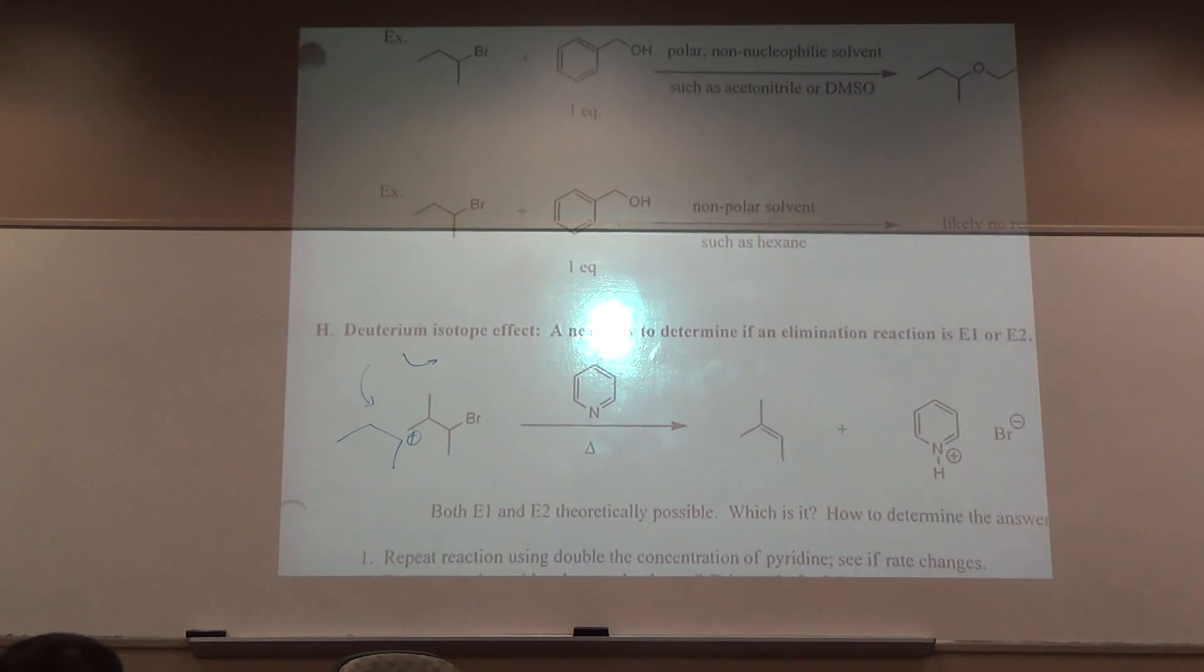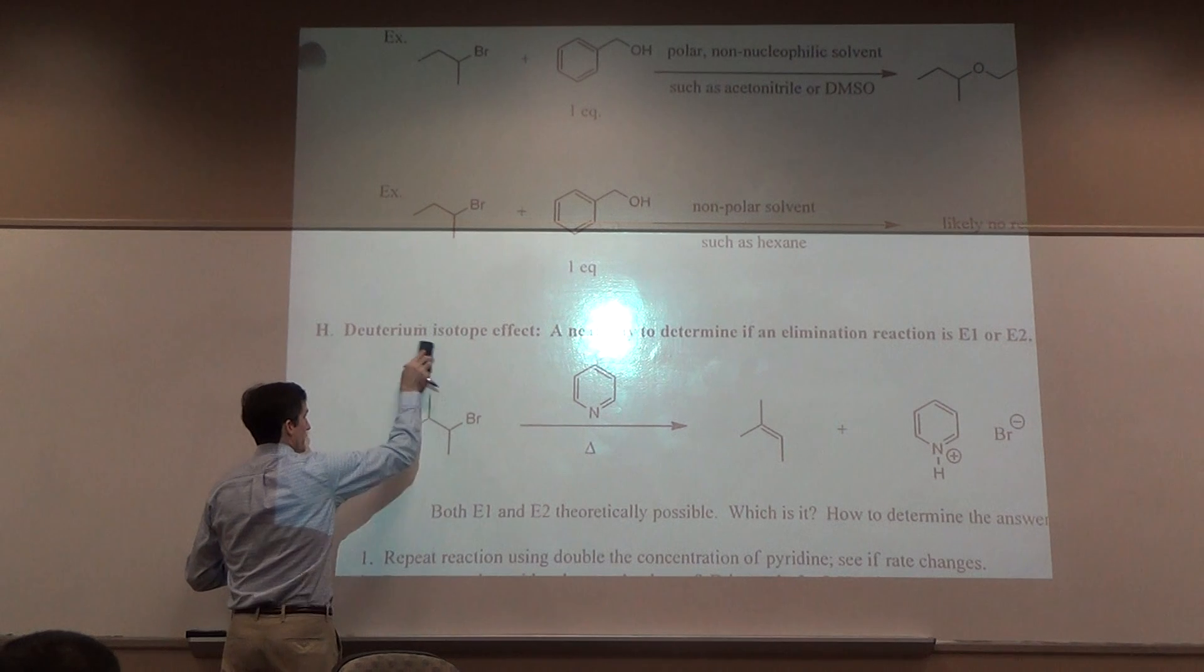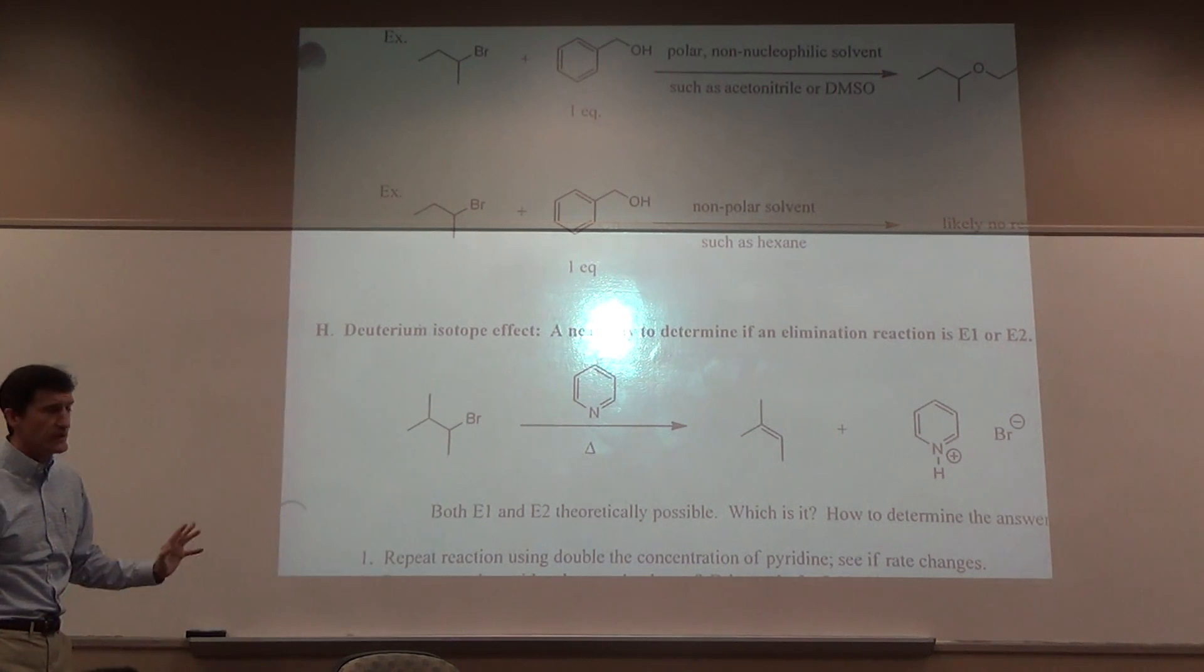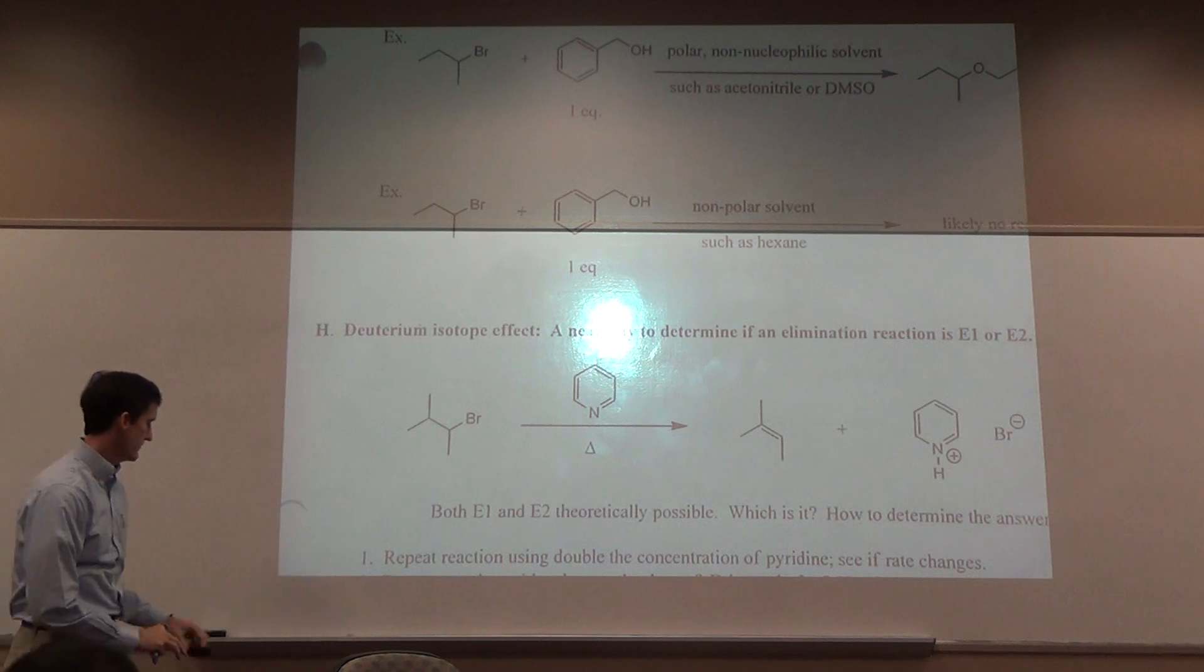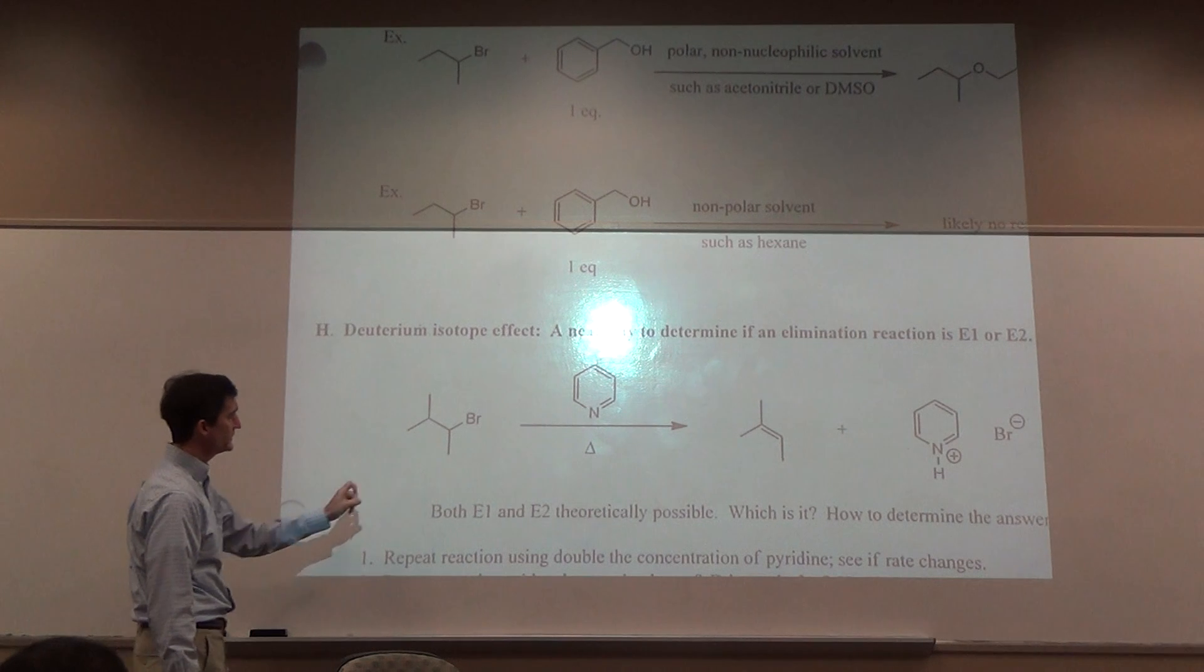Next topic is deuterium isotope effect. This is a neat way to determine if an elimination reaction is E1 or E2. Isotope effects are also seen in a number of places in organic chemistry. Likely to be seen also in organic 2.